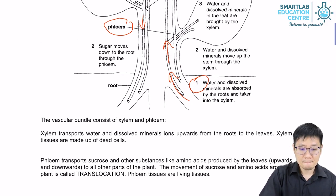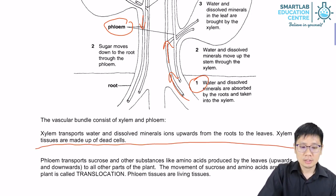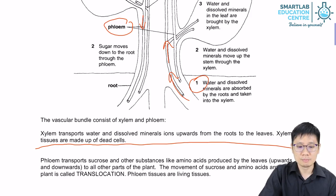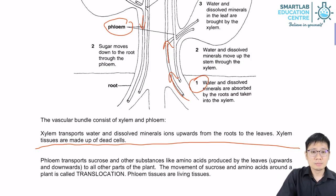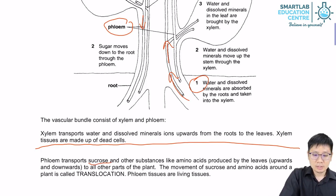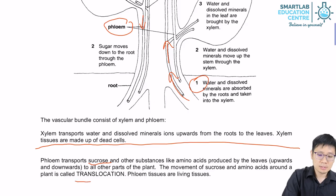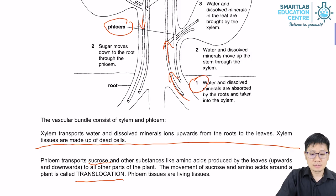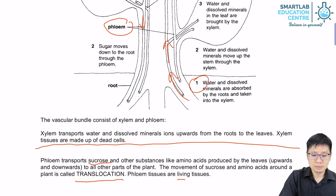In summary, the transport of water and mineral ions by the xylem is driven by a few forces, the most important being the transpiration pull. The xylem is made up of dead cells, which is important to know. The phloem, on the other hand, transports food — mostly sugars and amino acids, specifically sucrose — produced in the leaves. The phloem transports things up and down the stem; this process is called translocation. In contrast to the xylem, the phloem tissues are living tissues.